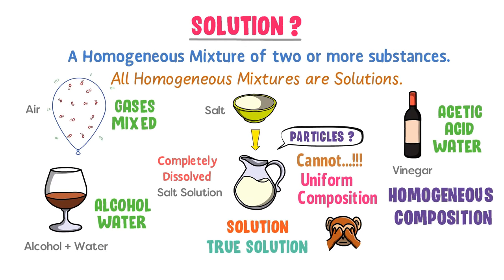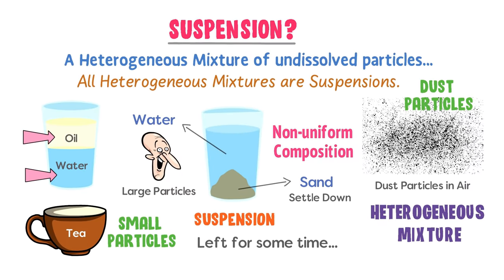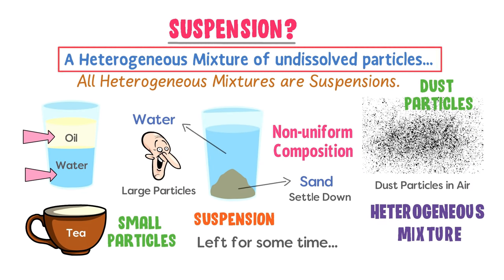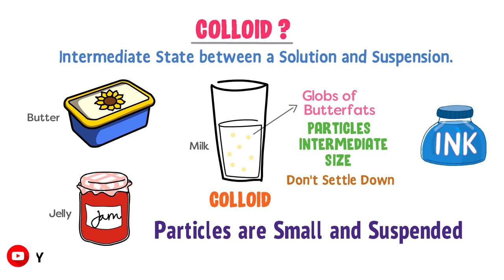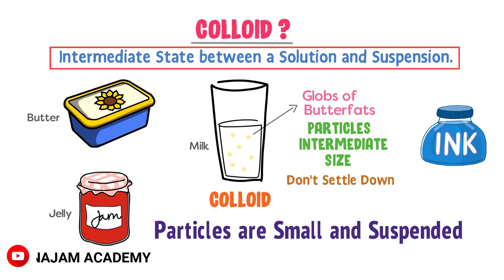To summarize: a solution is a homogeneous mixture which forms a uniform composition and we cannot spot the particles in it — like salt solution. A suspension is a heterogeneous mixture which forms a non-uniform composition and we can spot the undissolved particles in it. If a suspension is allowed to stand, its big particles settle down at the bottom due to gravity — for example, sand plus water.